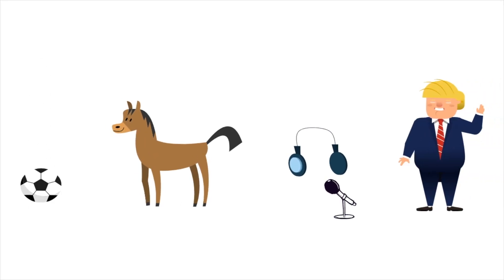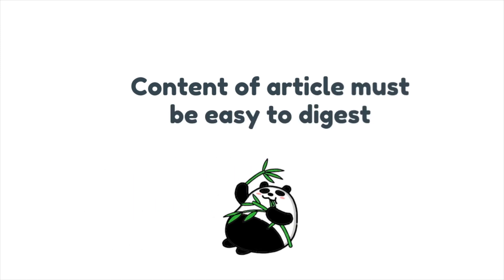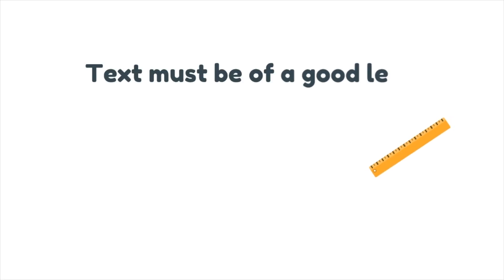It can be on sports, animals, music or even politics. Pointer number two, the article has to be easy to digest, as too many technical terms will not help your child in the understanding of the text. Point number three, the text has to be of a good length, as a lengthy article will not be able to sustain your child's interest.